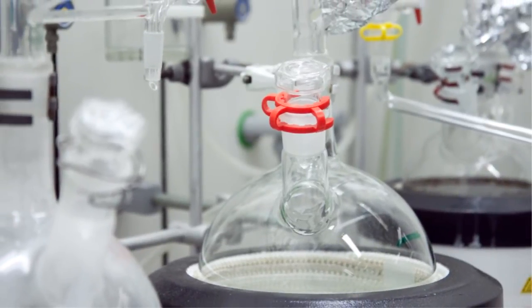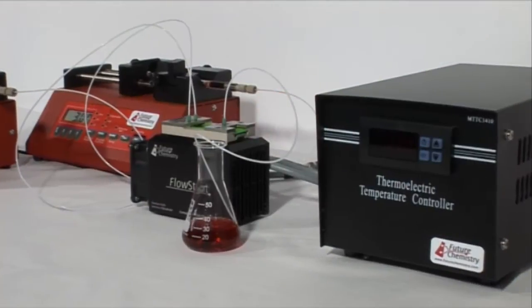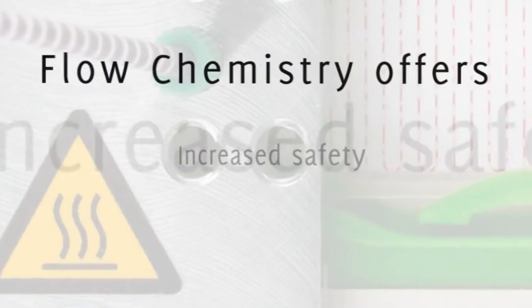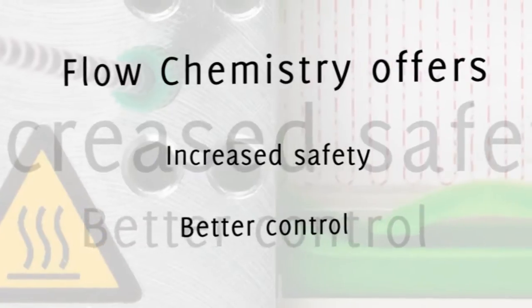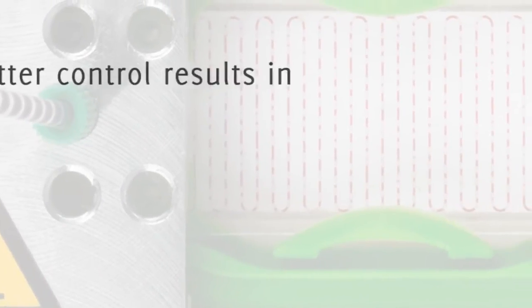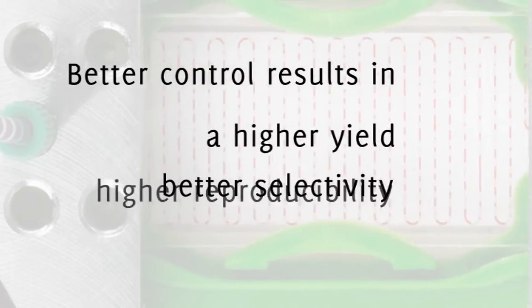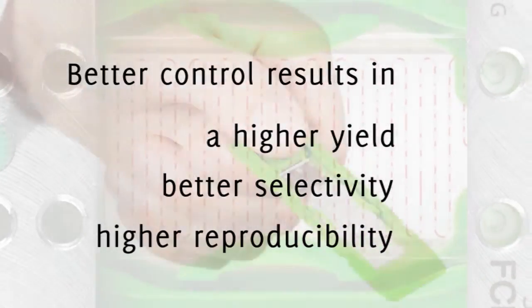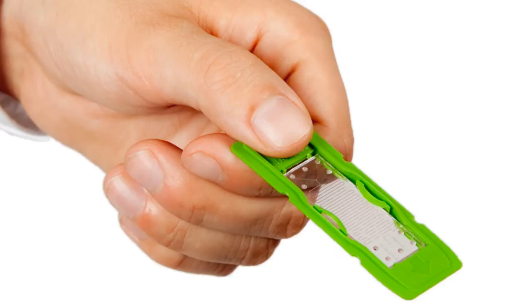In contrast to chemistry in batch mode, flow chemistry offers a number of benefits such as increased safety and better control over your chemical reaction. Better control results in higher yield, better selectivity, and higher reproducibility.